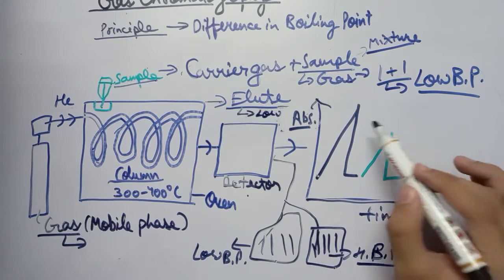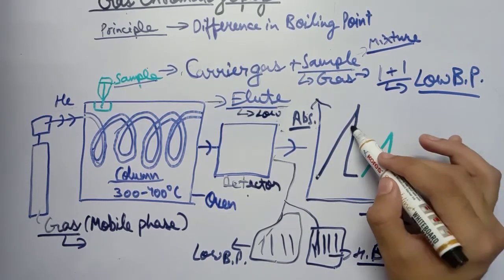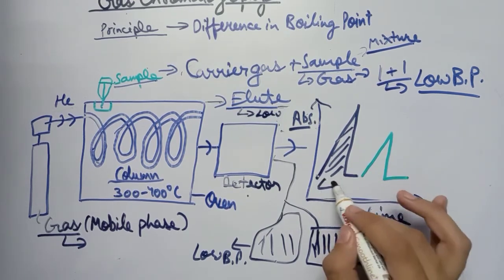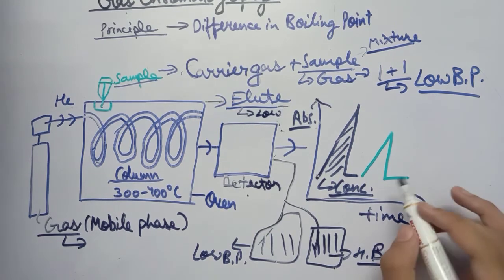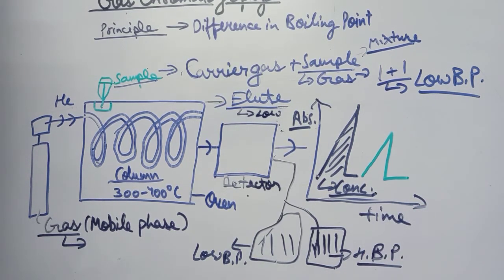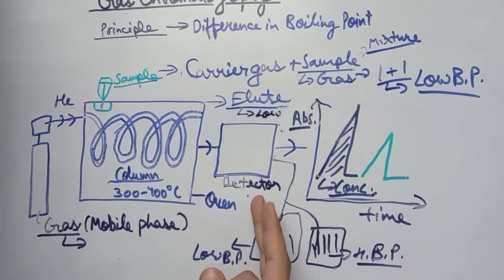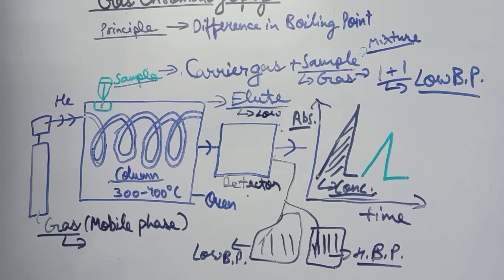The quantity of each component can be determined from the graph — the area enclosed within each curve gives the exact concentration of that component. In this way, gas chromatography allows us to separate components from a mixture and also quantify them using the graph plotted by the detector. I hope you have understood the basic functioning and instrumentation of gas chromatography — any doubts can be asked in the comment section.